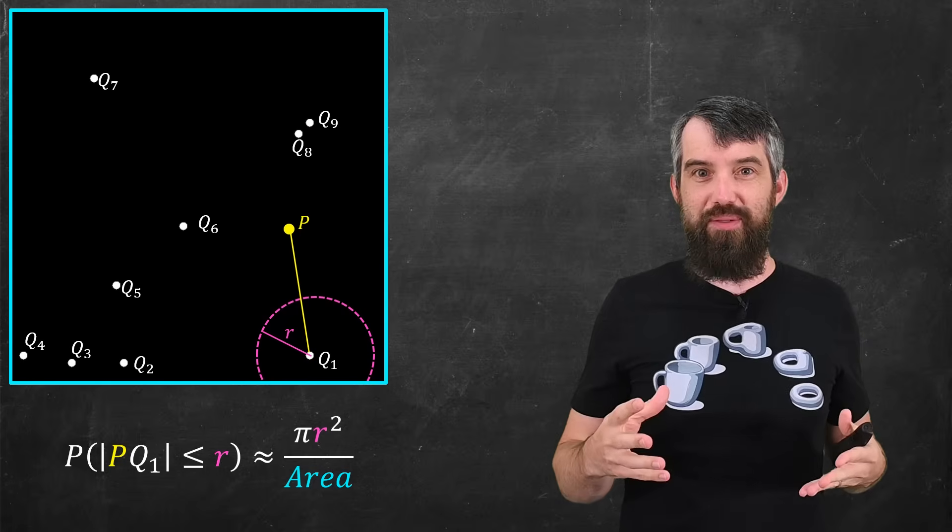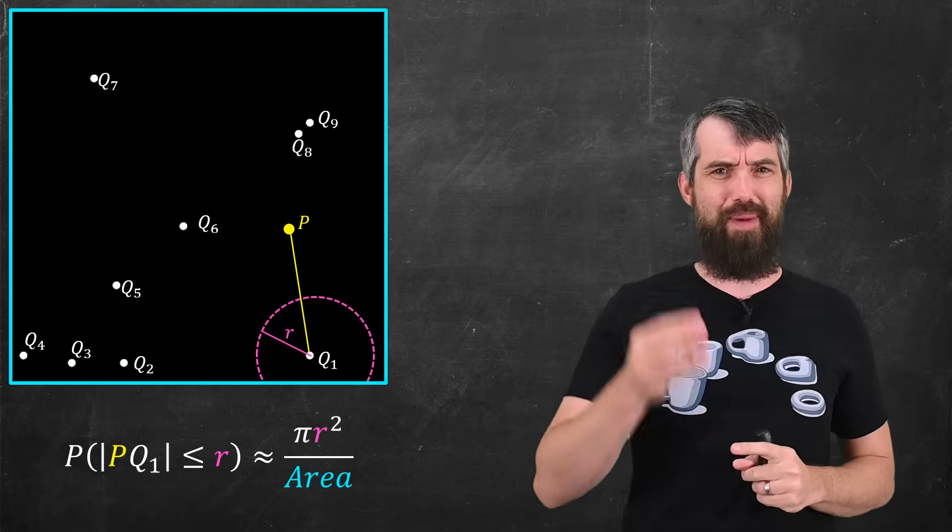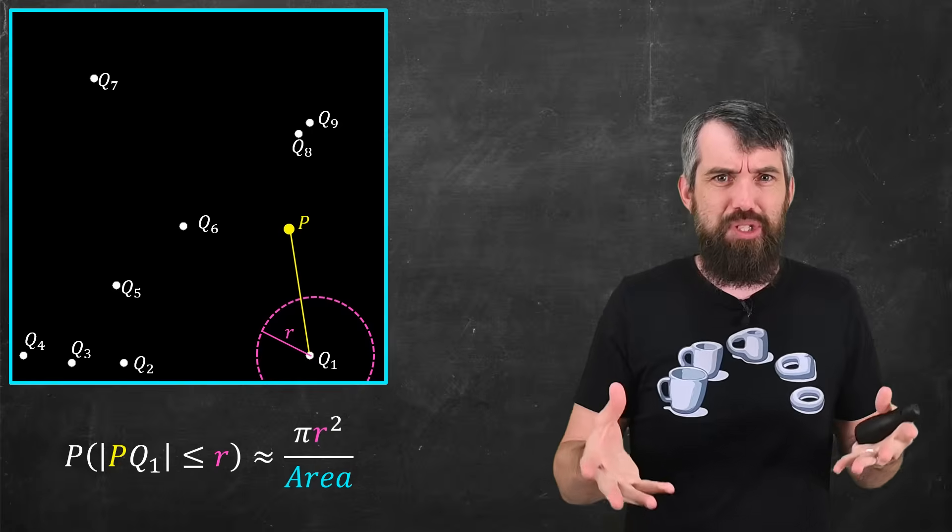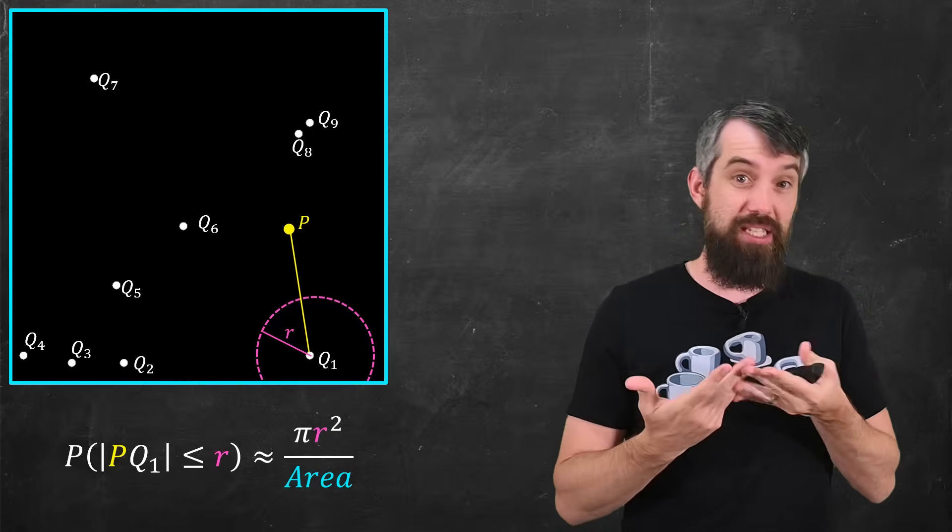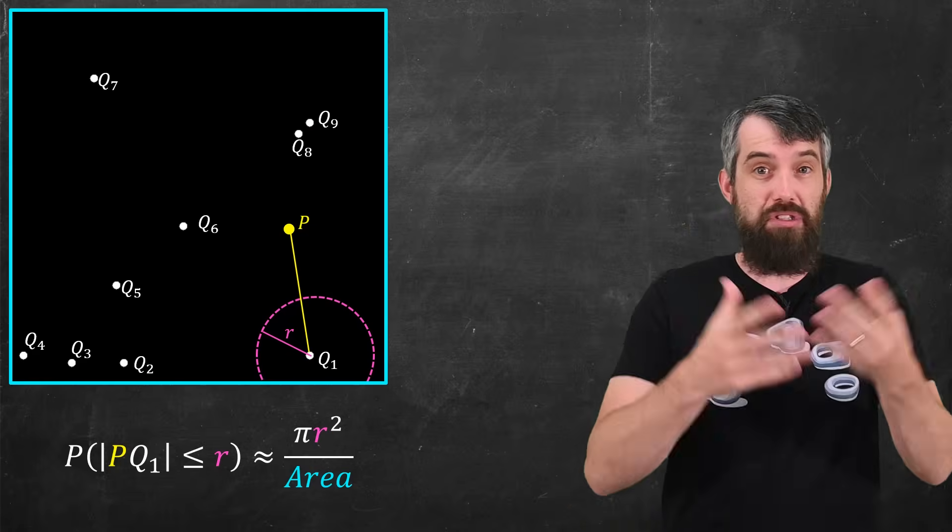And so I'm assuming that what I have illustrated here, where my point is right near the boundary, and so it sort of clips off and is in a full circle, I'm going to assume that that doesn't happen in a sufficiently large space.